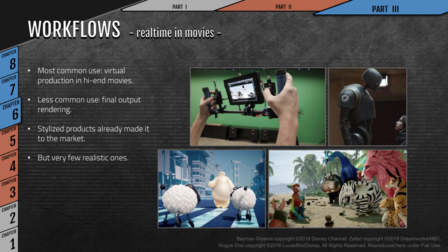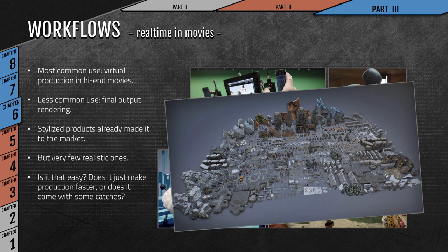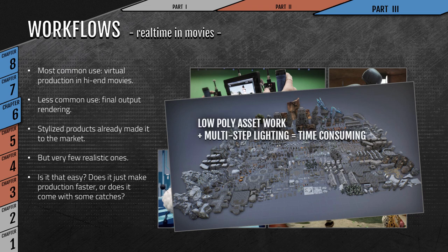The question is, is real time in movies that much of a universal blessing? Is it just a positive thing? Is it that easy? Well, it does come with a few catches. The main problem is always the same — it has been the same for a very long time — and it's low polygon asset production workflows. There are many technicalities, specifications, and restrictions that need to be taken into account when creating assets that must run smoothly in real time, and there is a learning curve that is not the easiest. In general, the process is fairly time consuming.